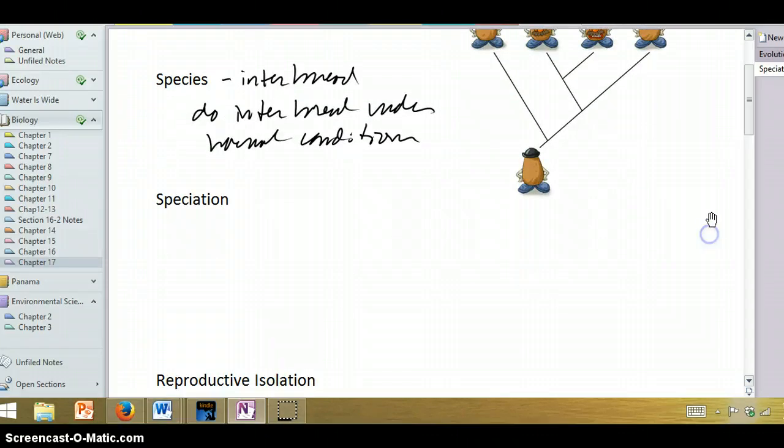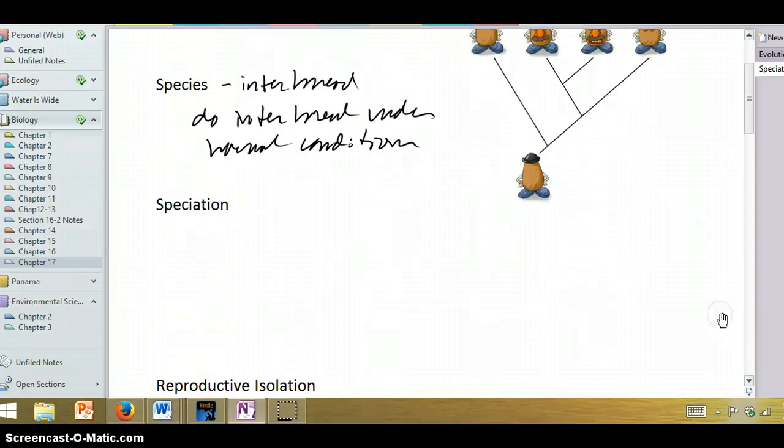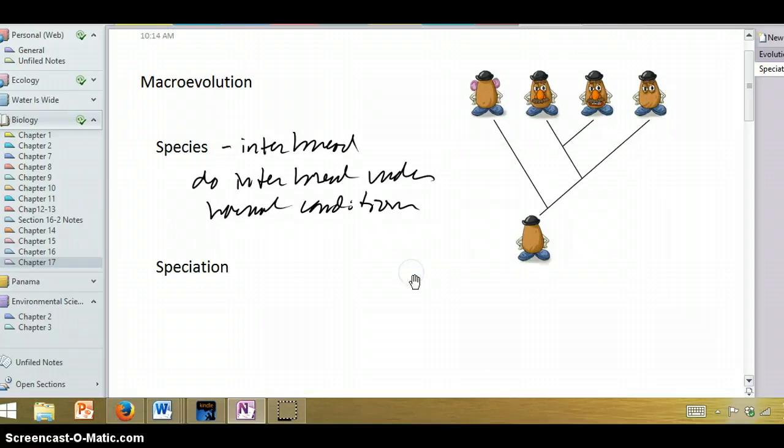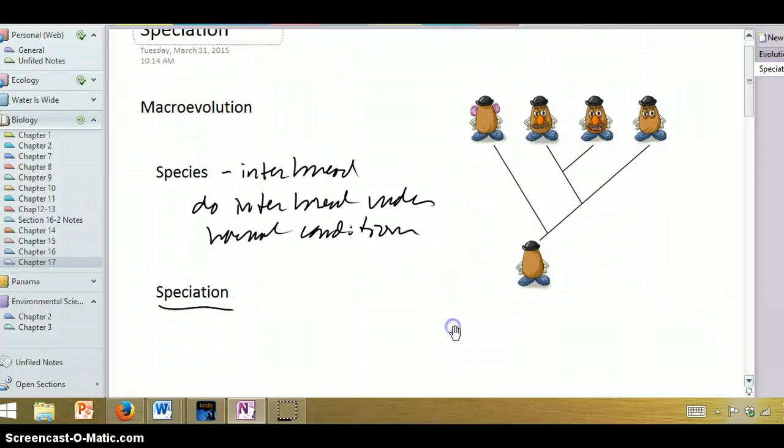But over time, as we sort of left off in the previous video, sometimes a particular species, their populations can become separate from each other, and if they become different enough, they begin to really not interbreed with each other. We can consider them separate species, and the process of speciation has occurred.